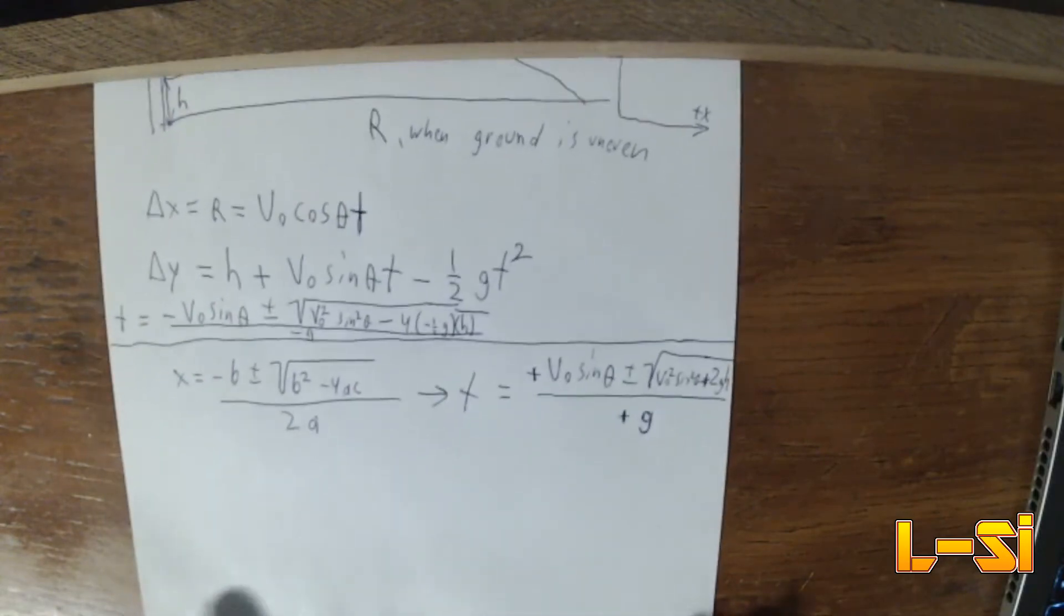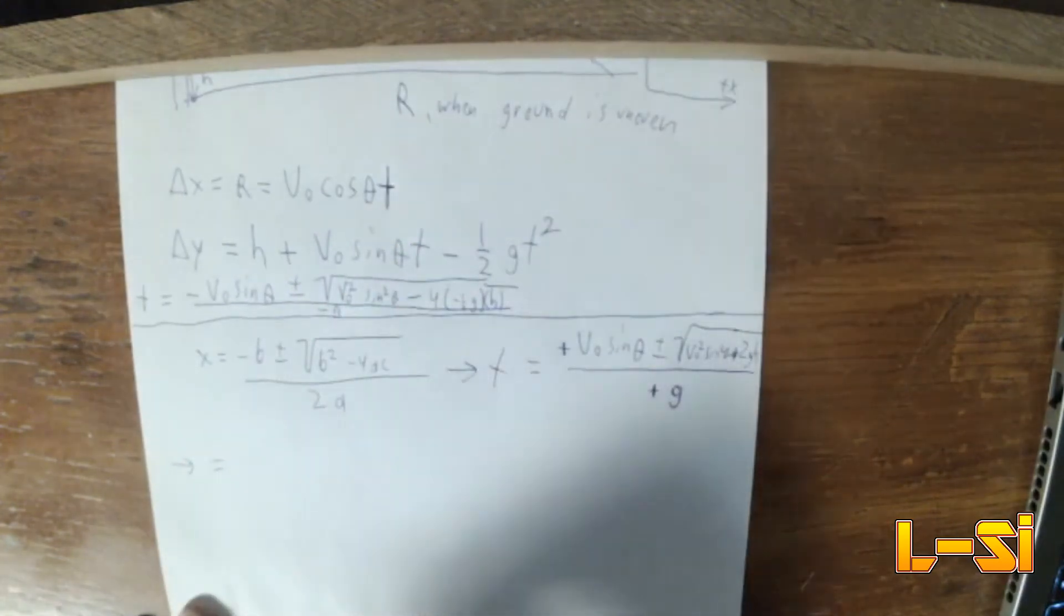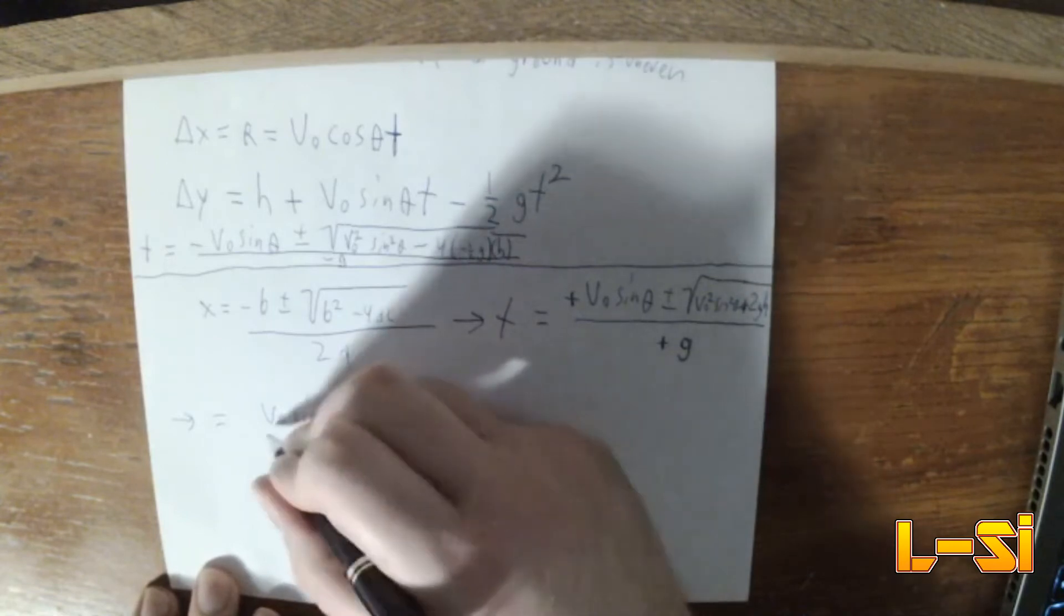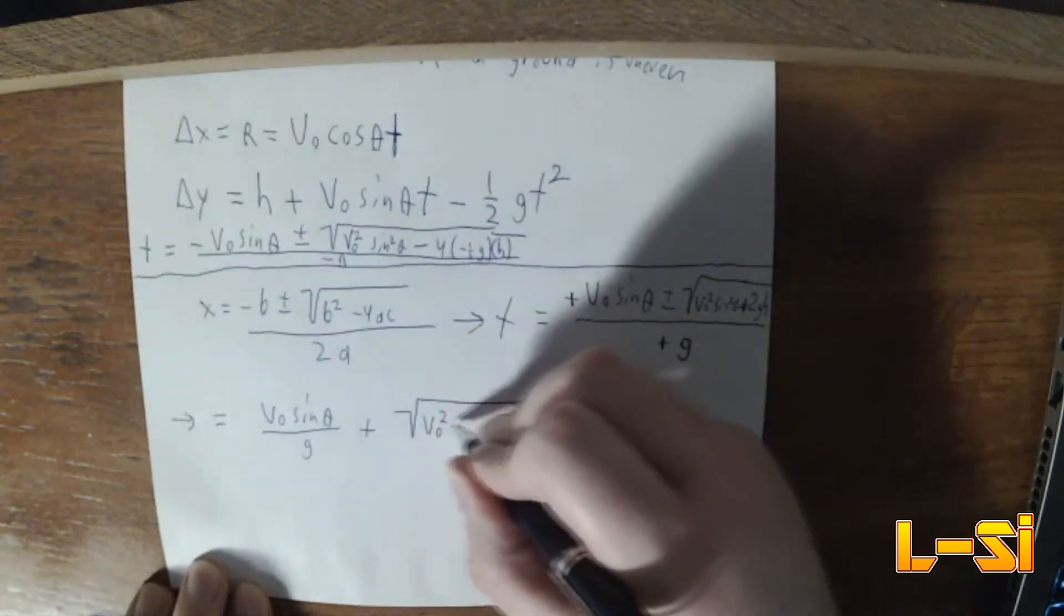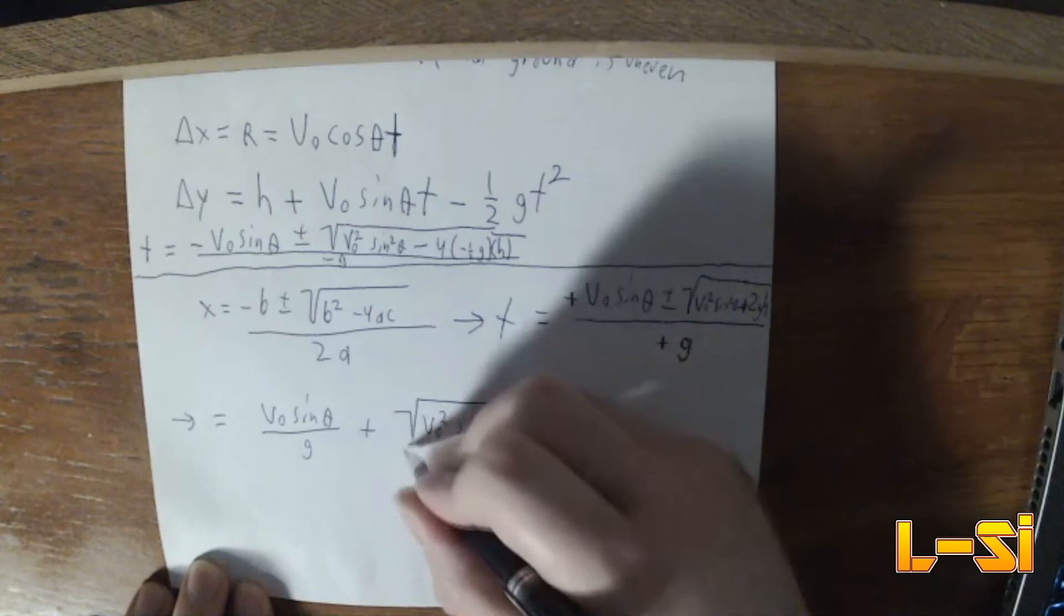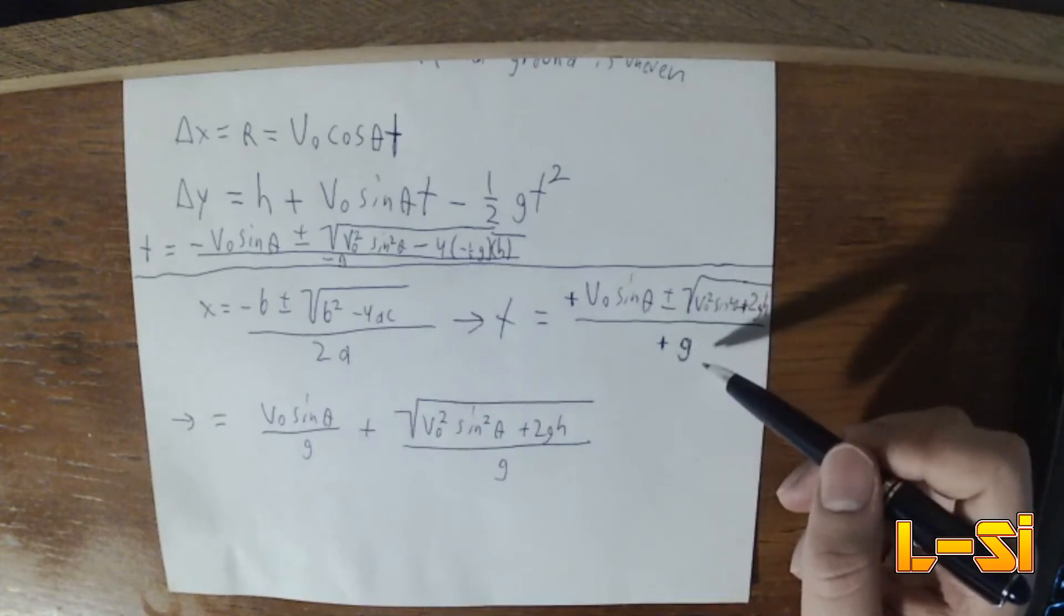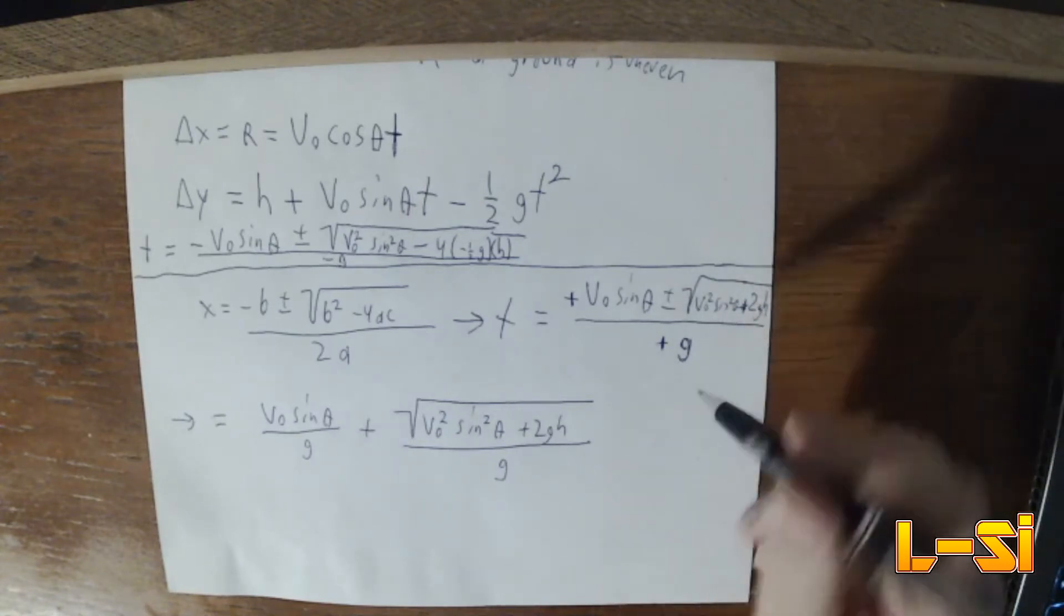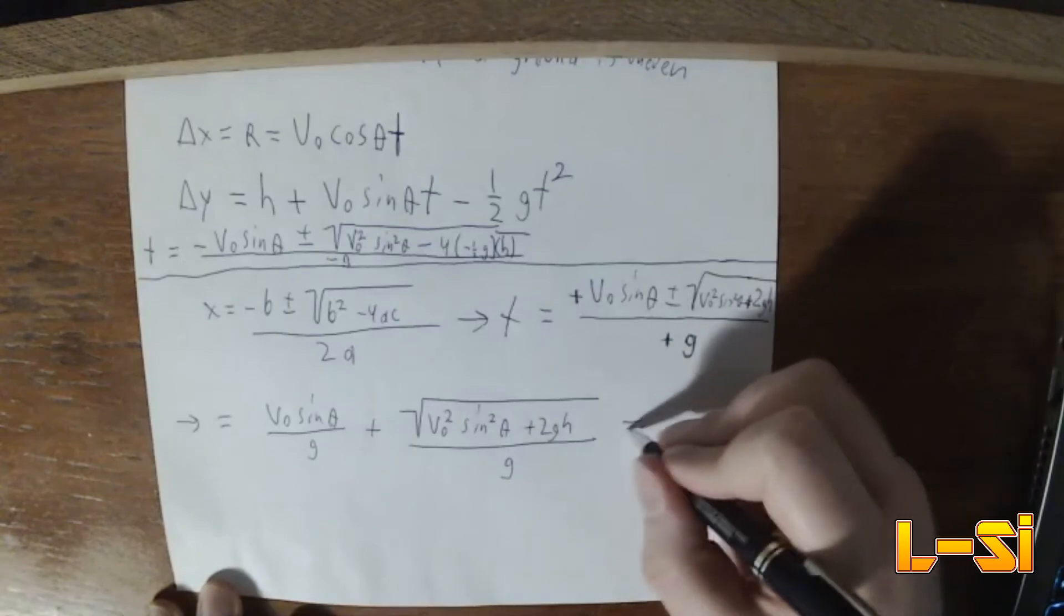So then what? Now, now we want to take this as being equal to V-naught sine of theta over G plus the square root of V-naught sine of theta over G, so V-naught squared sine of theta plus 2GH over G. All I did there was I broke up this fraction here. And I also disregarded the negative root because we don't want to get a negative time. So we're going to get this positive here. Then we're going to say, we're going to substitute this, because that's T.